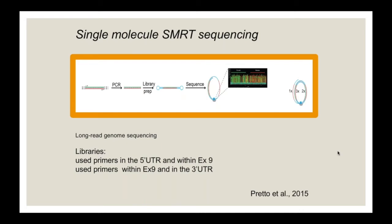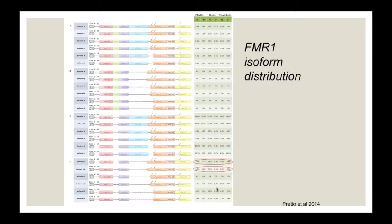We used single-molecule SMRT sequencing to answer these questions. We made libraries spanning two regions: the first from the 5-prime UTR to exon 9, and the second from exon 9 to the 3-prime UTR. Since the gene was discovered in 1991, it was known that splicing events involve exons 12, 14, 15, and 17. What we found was a diagram representing 24 predicted isoforms based on known splicing sites.